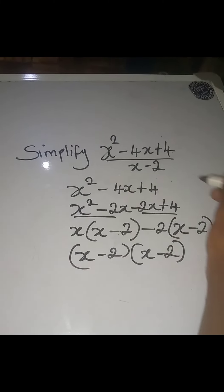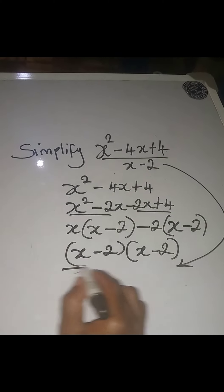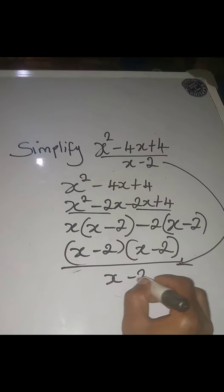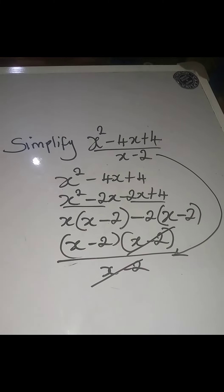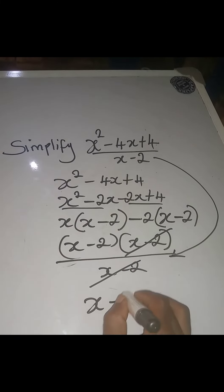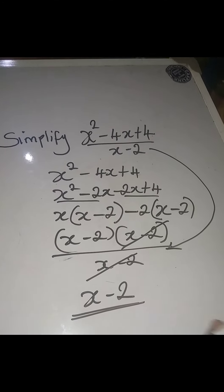Now I'll bring in the denominator, which is (x - 2). This means (x - 2) will cancel one (x - 2) from the numerator, and we'll have (x - 2) as our final simplified expression. Thank you for watching.